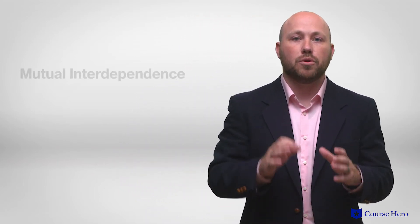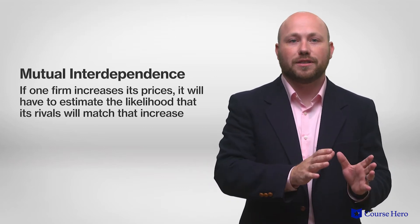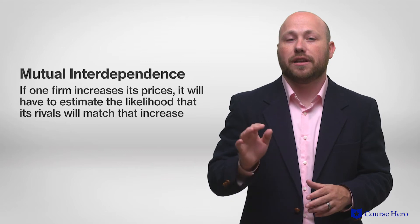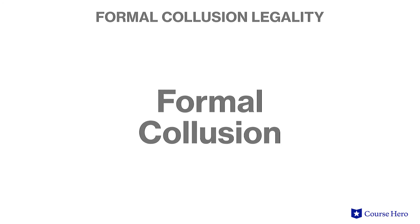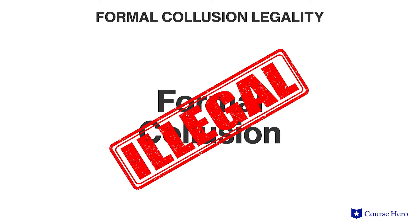Given the size and status of the firms in an oligopoly, each firm has to consider the response of the others to any move it makes. This means that oligopolists' actions are mutually interdependent. If one firm increases its prices, it will have to estimate the likelihood that its rivals will match that increase. Failure to consider the rival's response could result in losses as customers switch to the good or service of the cheaper supplier. There is often a level of informal collusion, such as price leadership, which is legal in the United States because the firms are not necessarily working together directly. Formal collusion, where firms directly work together to raise prices, is illegal in the United States and Europe.